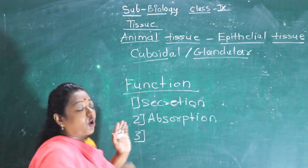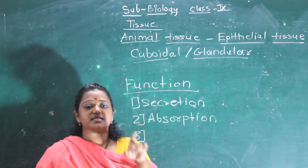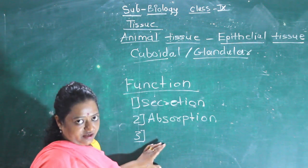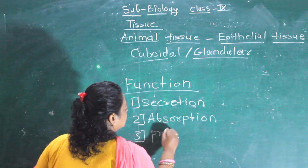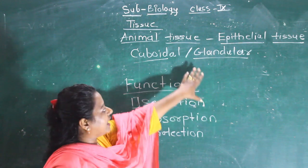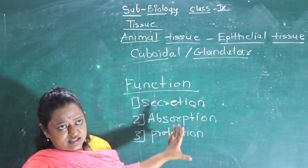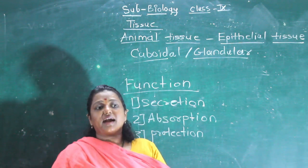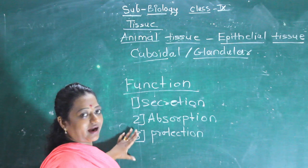As we discussed in yesterday's lecture, the common function of all epithelial tissue is protection. So protection is also a function here. Along with that, secretion and absorption are ongoing processes. The glands are secreting digestive juices, enzymes, and hormones. Therefore the three functions of glandular or cuboidal epithelial tissue are: secretion, absorption, and protection.